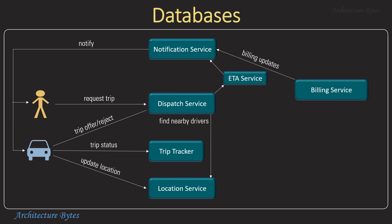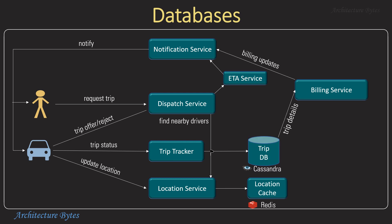Each of these services needs to store data, so let's add databases here. The location service uses a location cache — for example, for radius searches. Trip trackers could store information in a NoSQL database like Cassandra, while driver and rider profile details could reside in an RDBMS like MySQL. You could use any other appropriate database of your choice. We will look at these services and databases in more detail soon.